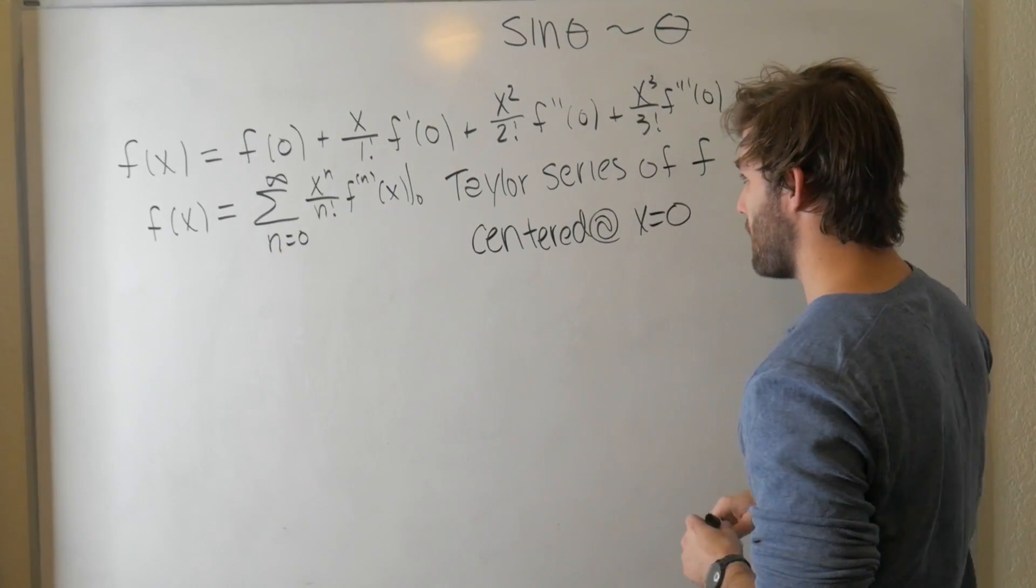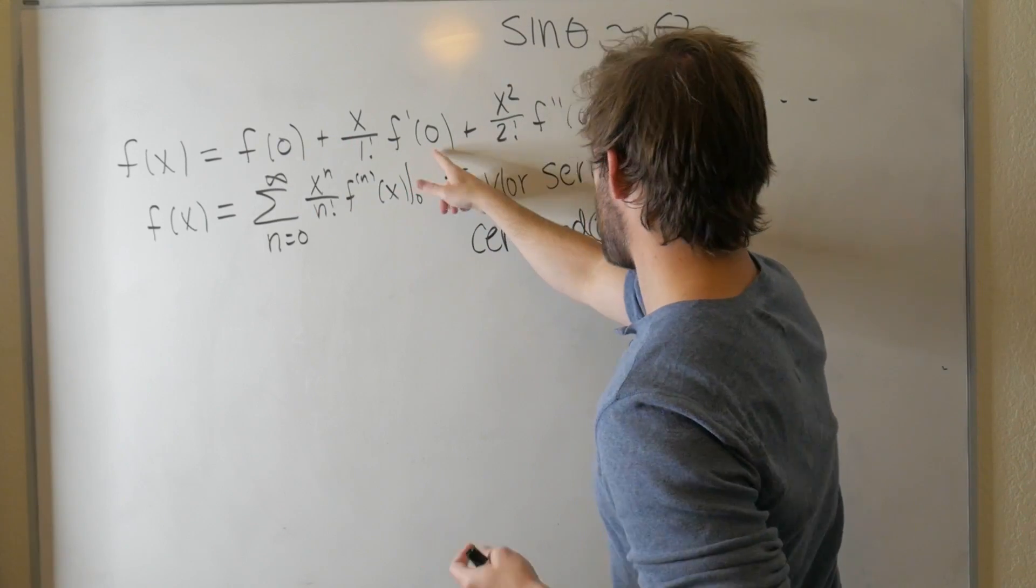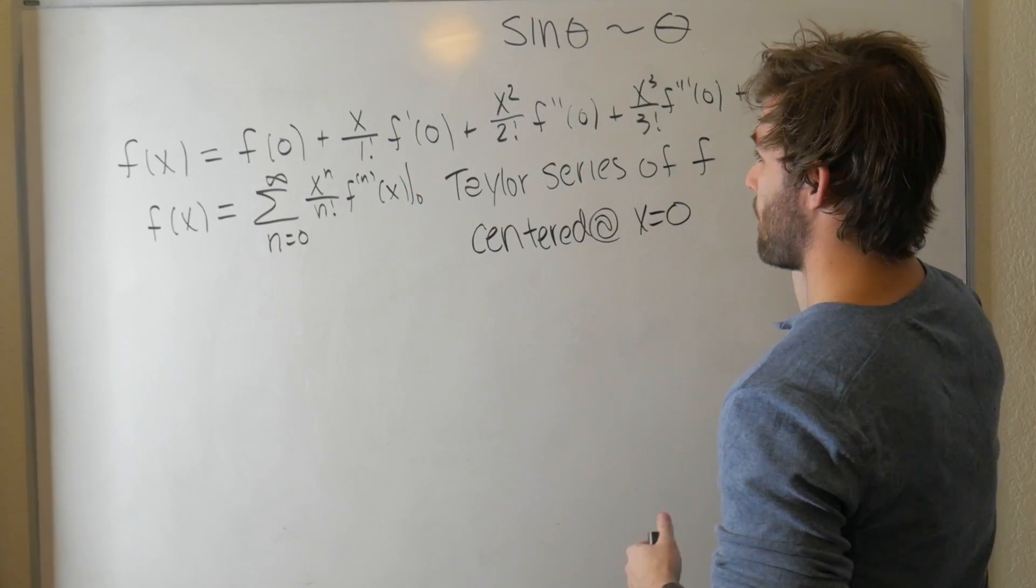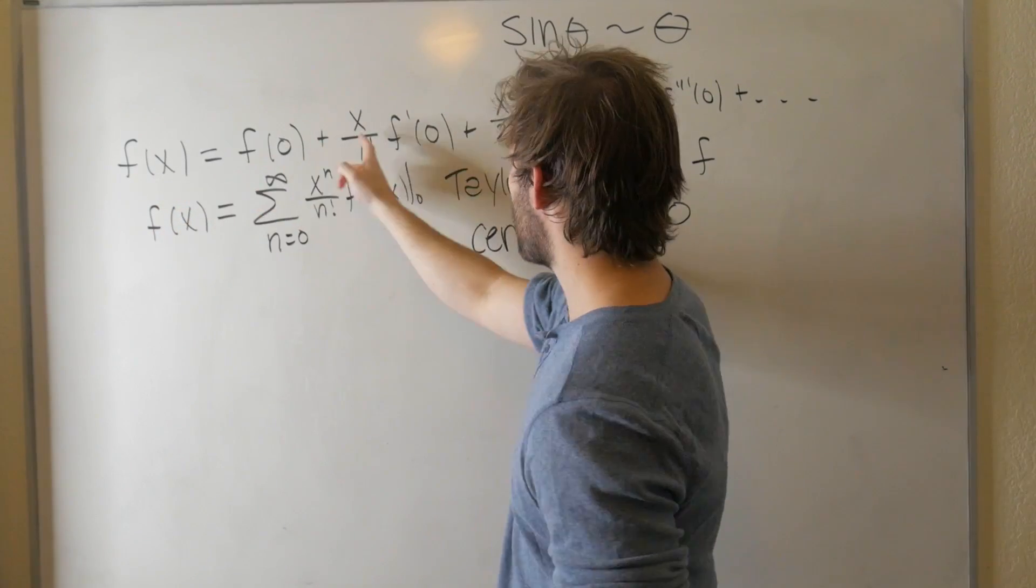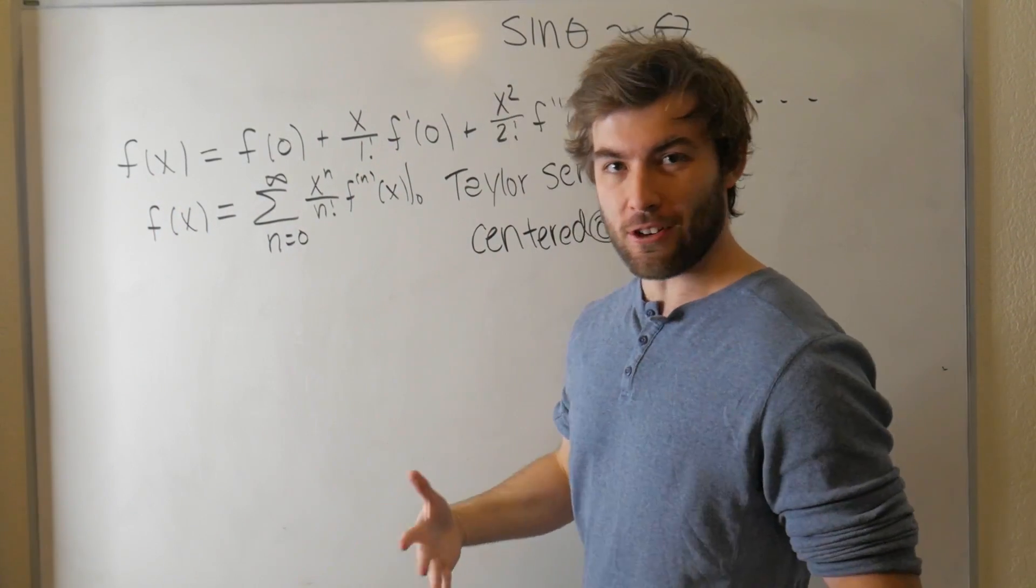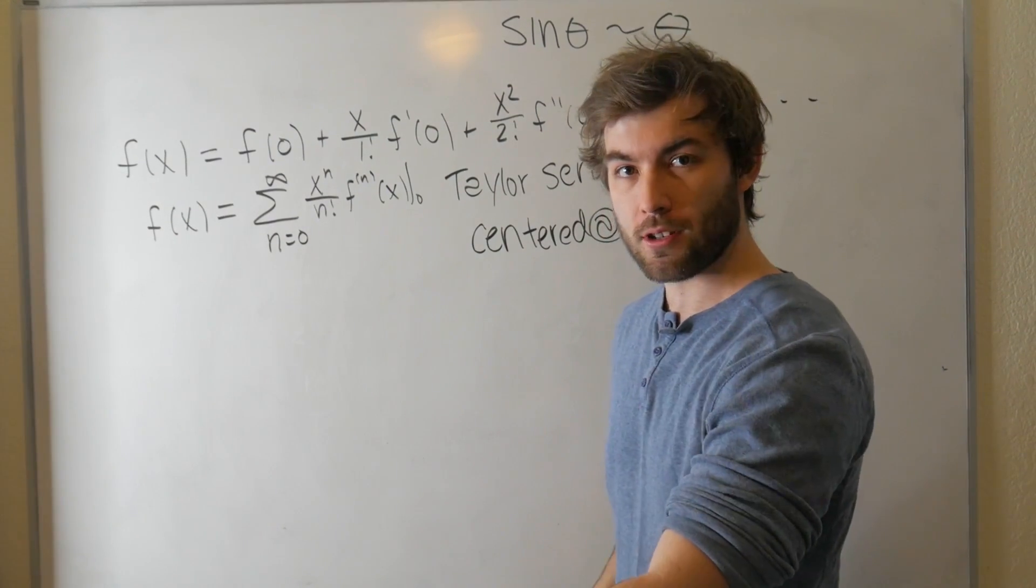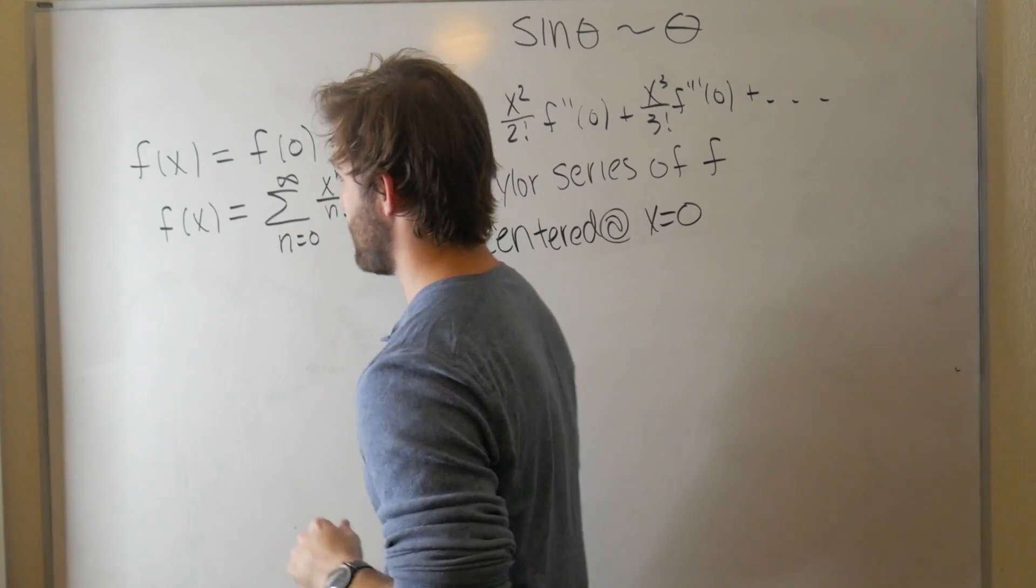Now, you can get an estimate of what the function looks like if you truncate this at a certain point. A more compact way of writing this is f of x equals the sum from n equals zero to infinity of x to the n over n factorial times the nth derivative evaluated at zero. This is the Taylor series of f centered at x equals zero. What this comes down to is we're expressing some function in terms of a polynomial. That's the beauty of the Taylor series.